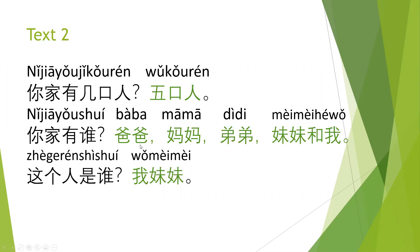爸爸 — dad, 妈妈 — mom, 弟弟 — younger brother, 妹妹 — younger sister, 和我 — and me. 这个人是谁？— Who is this person? 这个人. 我妹妹 — my younger sister.